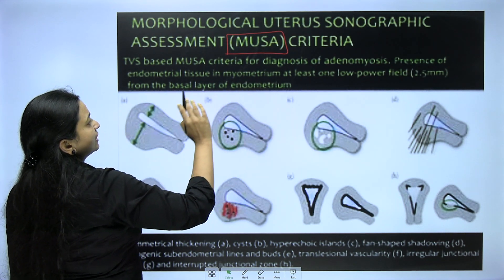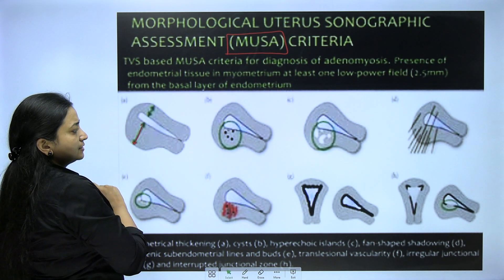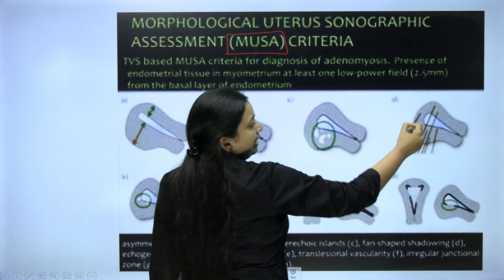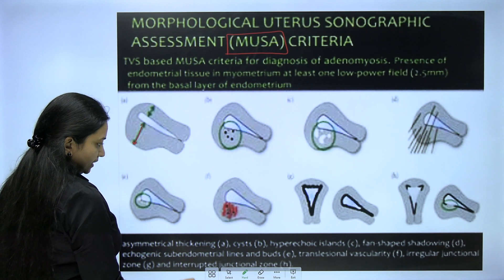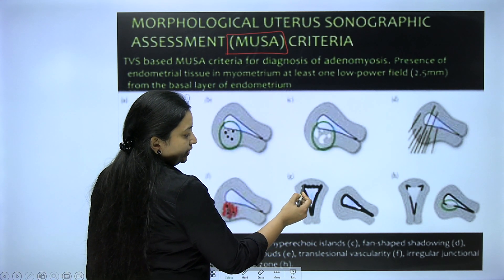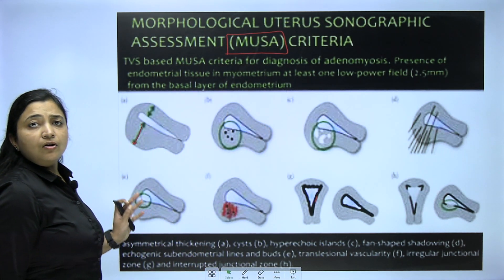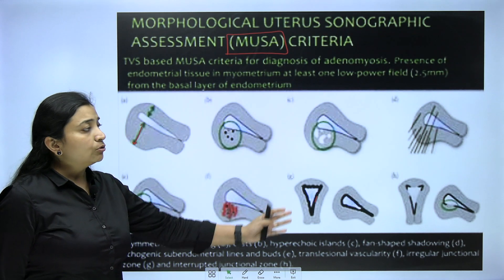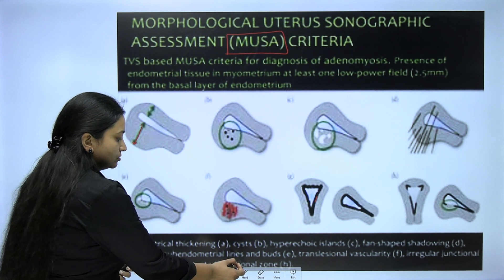The MUSA criteria includes: posterior wall is thicker, small myometrial cysts, diffuse myometrial cysts, fan-shaped vascularity or venetian blind sign, subendometrial halos, diffuse vascularity or focal lesion suggesting adenomyoma, subendometrial diffuse infiltration, and disrupted endometrium at places. These are all the signs to look for on a sonography report. Transvaginal sonography especially gives you the diagnosis in cases of adenomyosis.